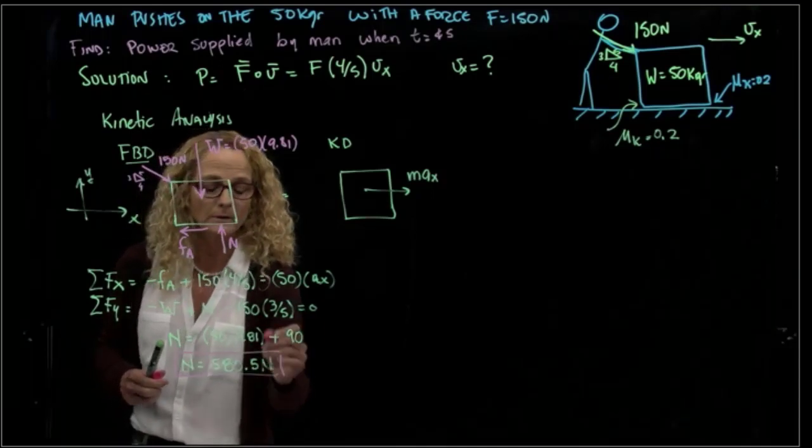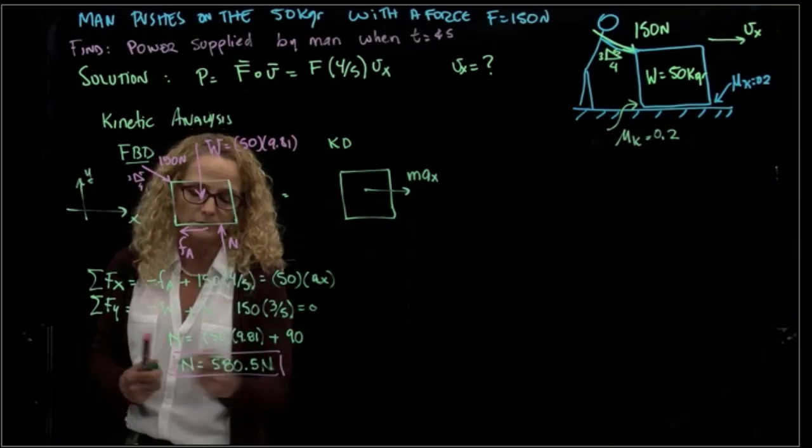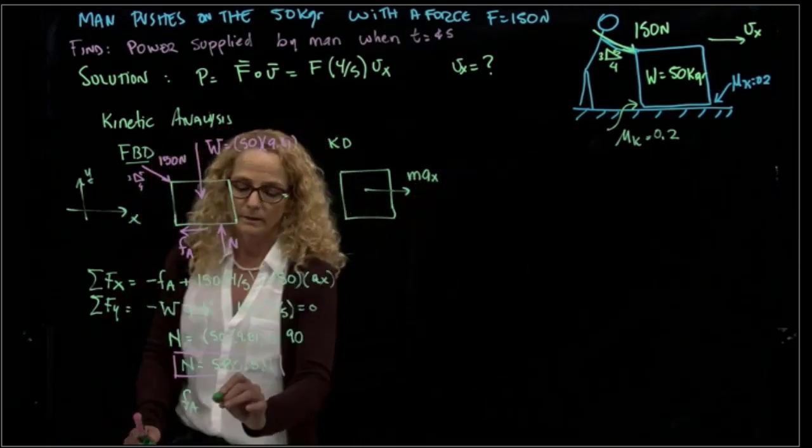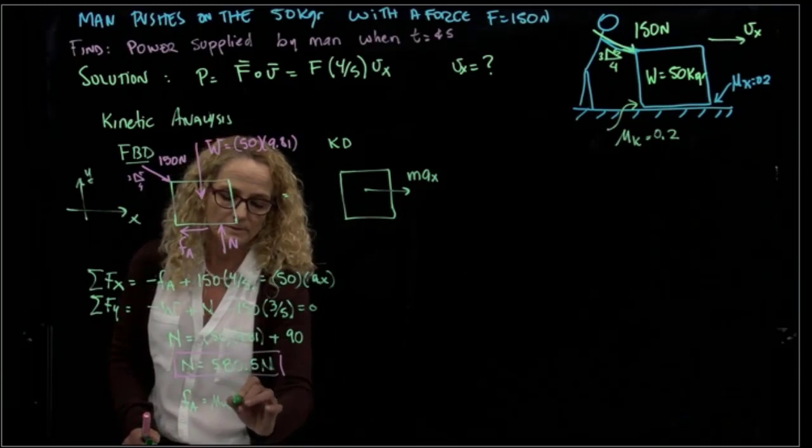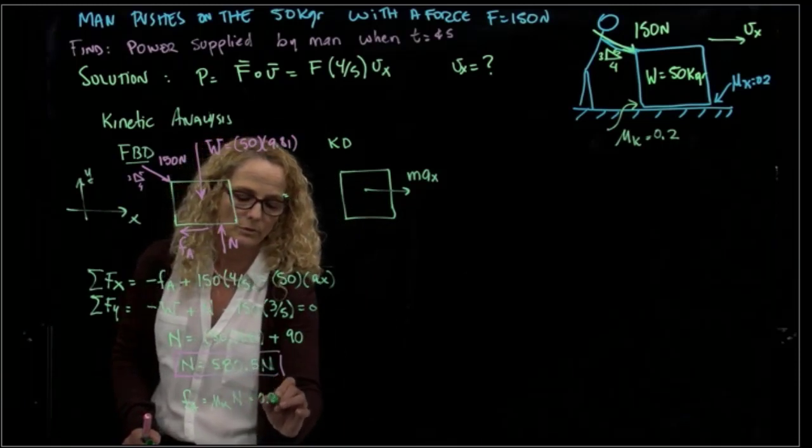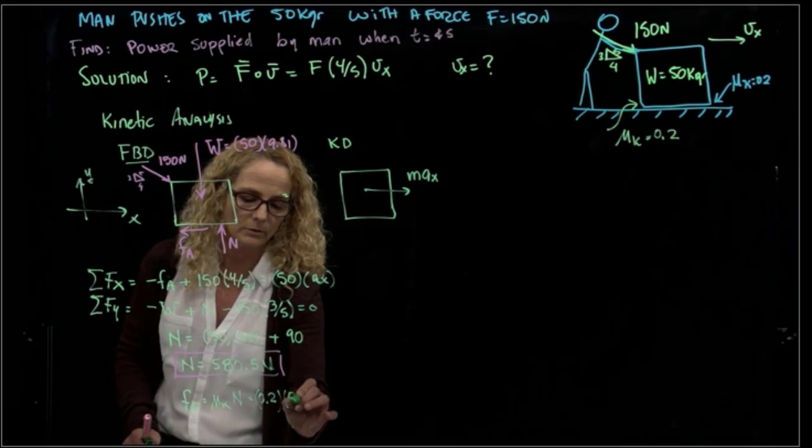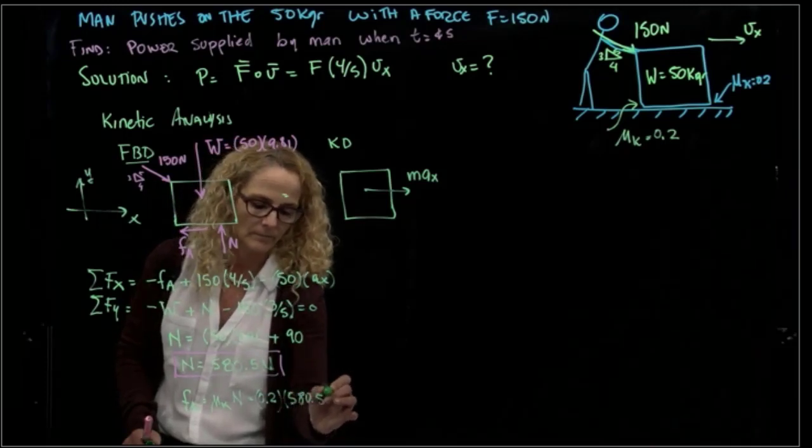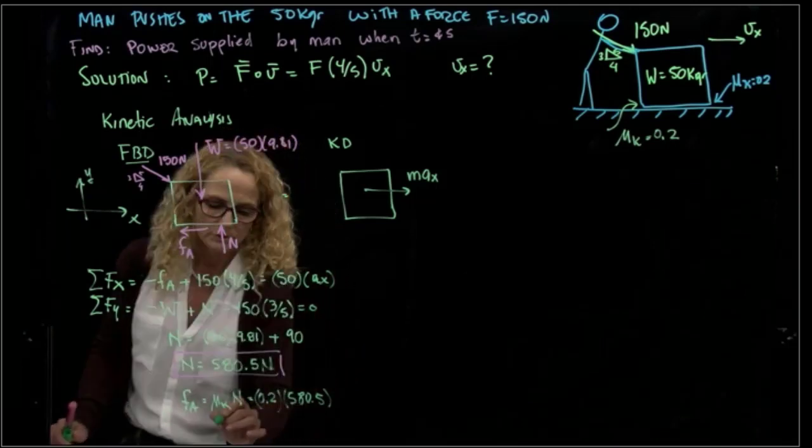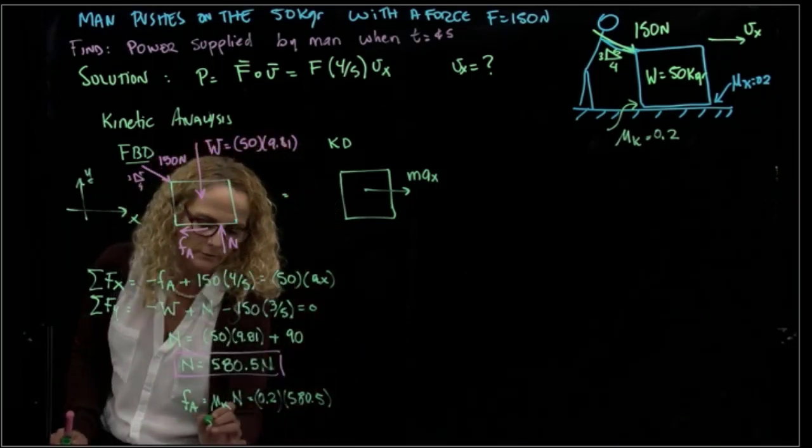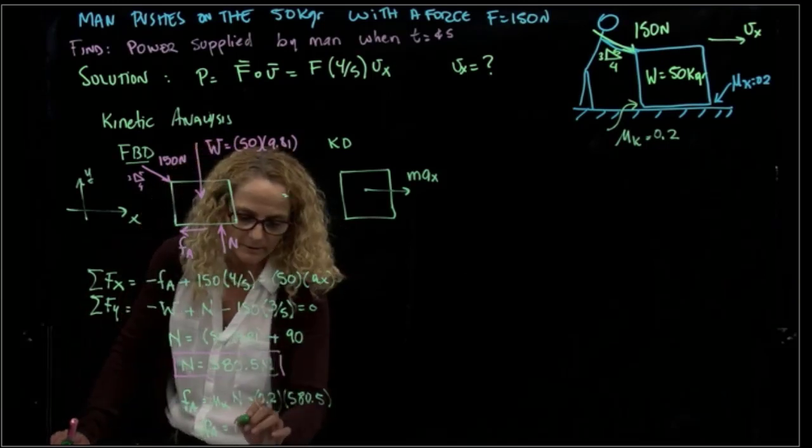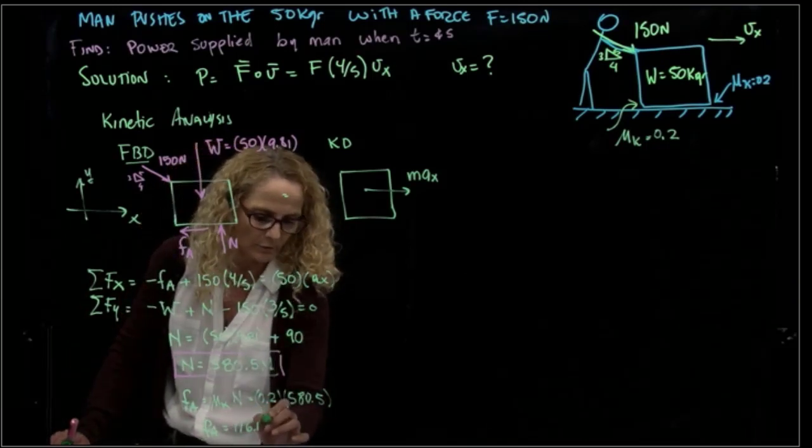If we have our normal force, we have our friction force. Our friction force is the kinetic coefficient times the normal, which is 0.2 times that normal force. Our friction force is equal to 116.1 newtons.